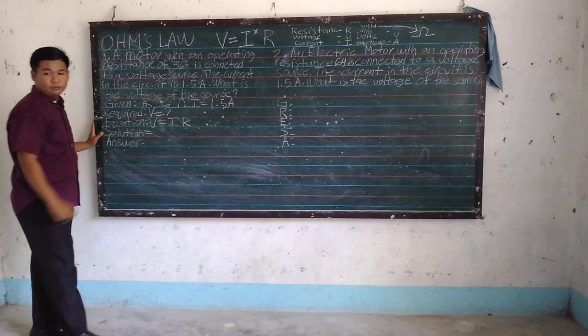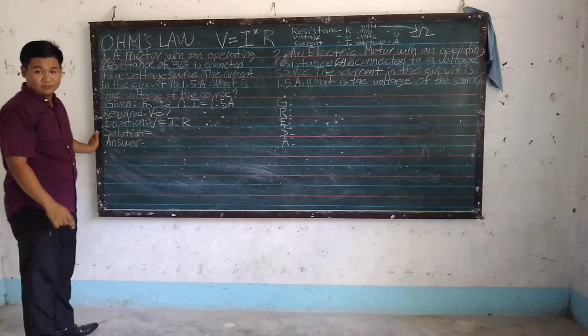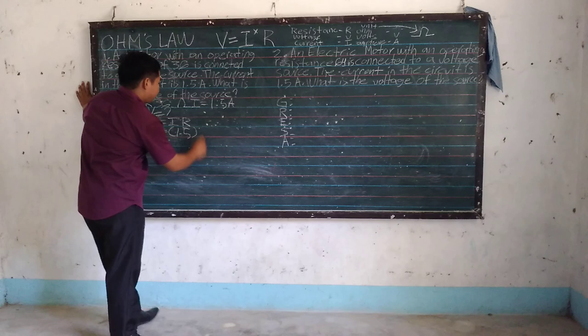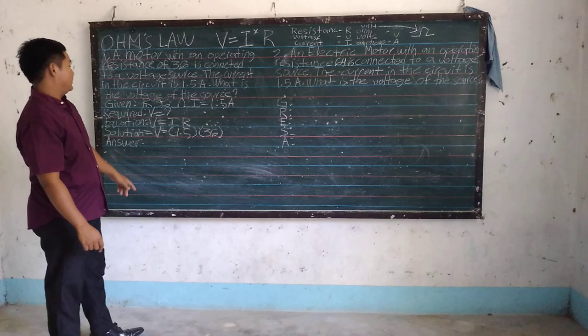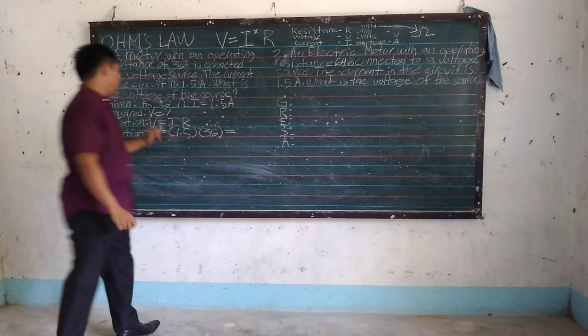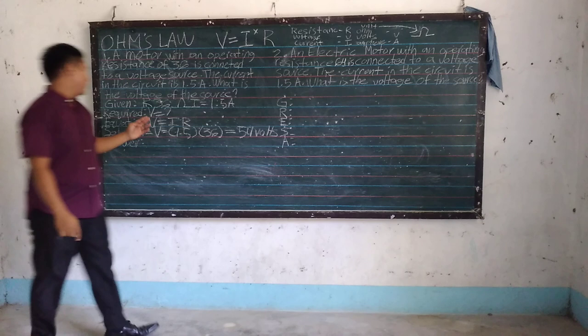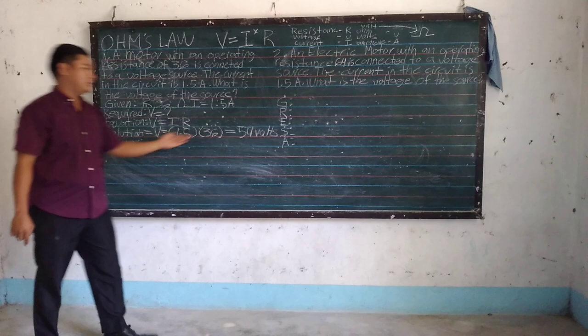The solution is to simply multiply I and R: 1.5 multiplied by 36. So V equals 1.5 times 36, where 1.5 is the ampere and 36 is the resistance. V equals 1.5 times 36 equals 54, so the voltage is 54 volts.